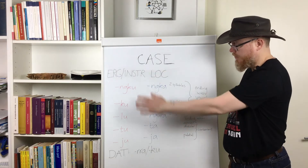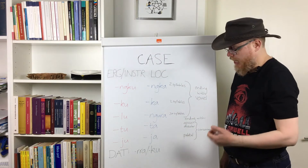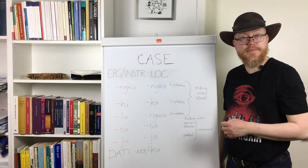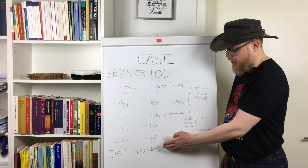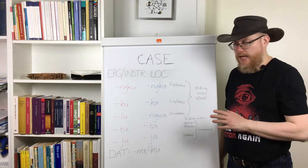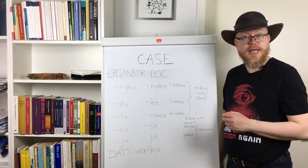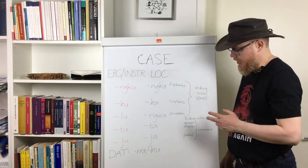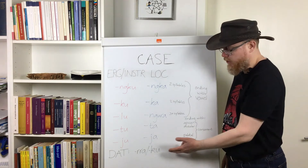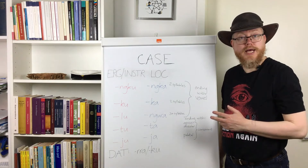Now these are the Ngara suffixes, and as you can see there are two dative suffixes in Ngara. 'Gu' attaches to nouns that end in a consonant, and 'ra' attaches to nouns that end in a vowel. There is no risk of confusion between dative 'gu' and ergative 'gu', and I will get back to that.